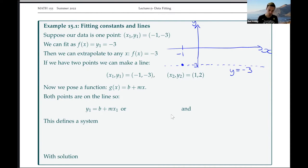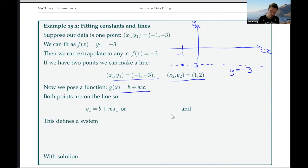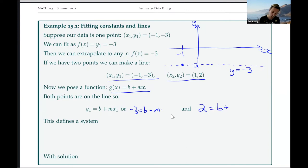Whereas if we have two data points, we can now plot a straight line. So if we have x1, y1 equals minus 1, minus 3 and an additional point 1, 2, we can plot a straight line through those two points. If we call the function g of x equals b plus mx and assume both points lie on this line, we substitute our points in: minus 3 equals b plus m times minus 1, and y2 equals b plus m times 1.